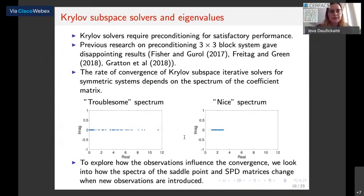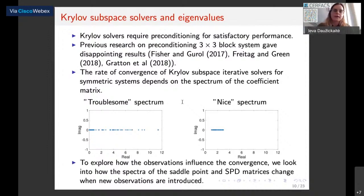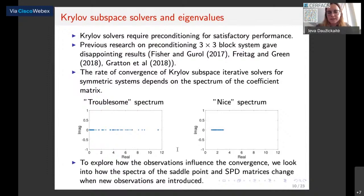As mentioned, these systems will be solved with iterative methods. Krylov solvers are usually the methods of choice, and it is known that these solvers need preconditioning for fast convergence when solving large systems. There has been previous research on preconditioning the three-by-three block system; however, it gave disappointing results. The rate of convergence of Krylov subspace solvers for symmetric systems depends on the spectrum of the coefficient matrix, as well as on the right-hand side and initial guess. A nice spectrum is when eigenvalues are clustered away from zero; if eigenvalues are close to zero and not clustered, convergence may be poor.